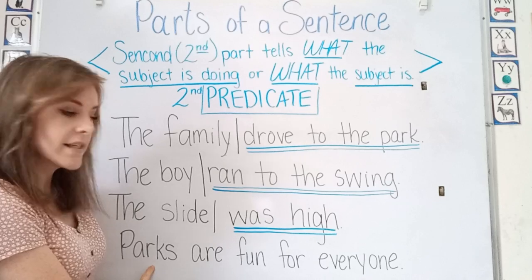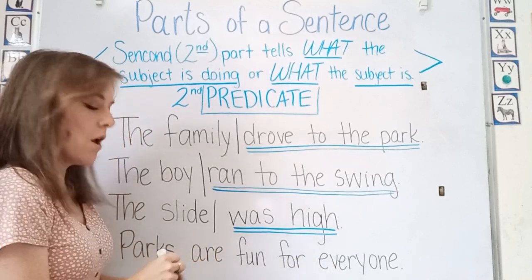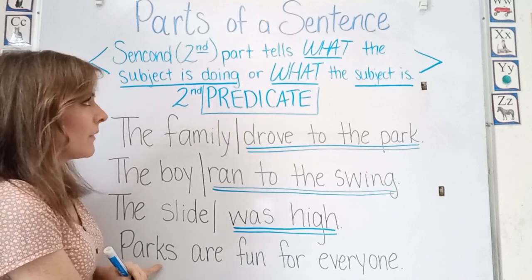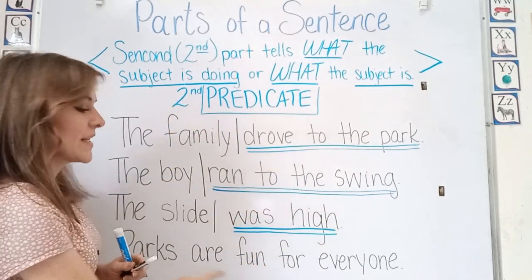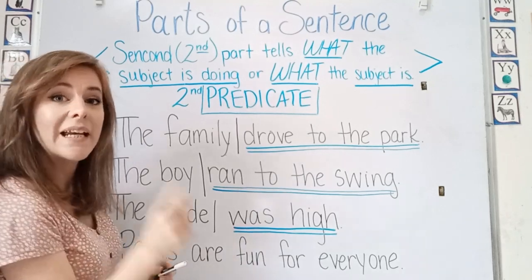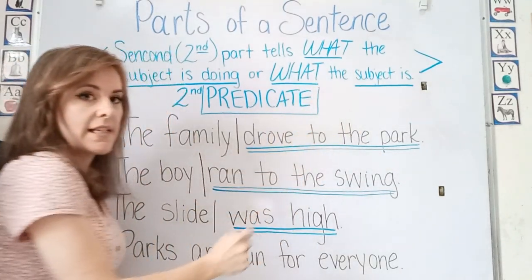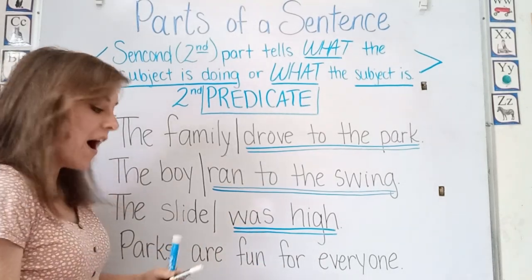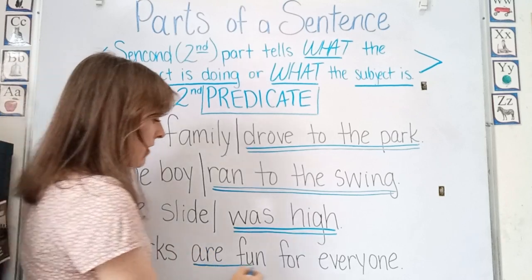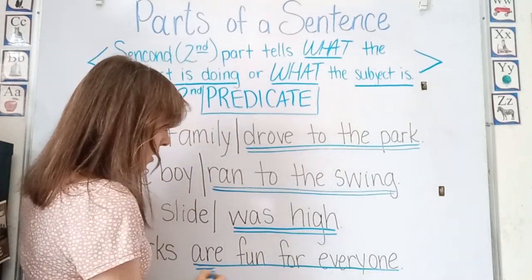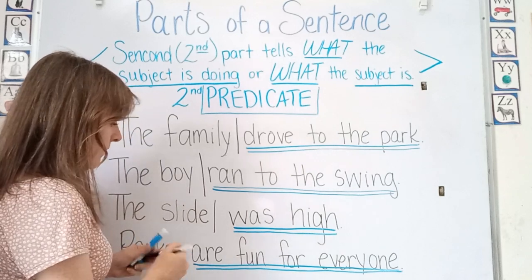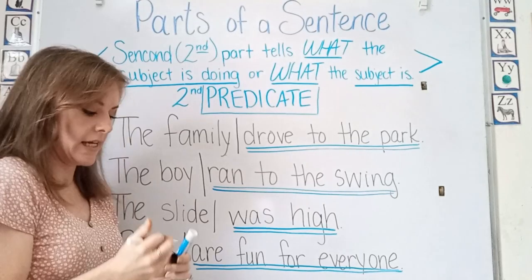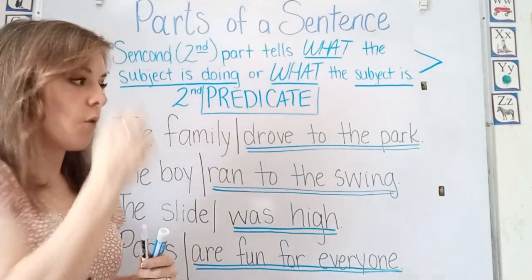Parks are fun for everyone. Parks is our subject, but this doesn't tell us what parks did — it is telling us what the subject is. Parks is our subject, and we're telling you that parks are fun for everyone. So the predicate part is this part right here because it's telling you what the subject is.